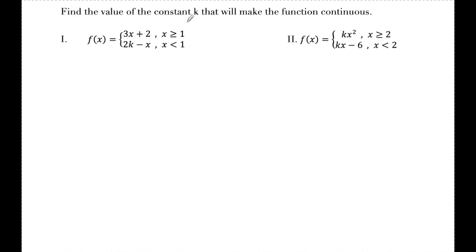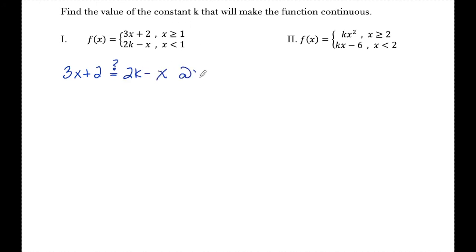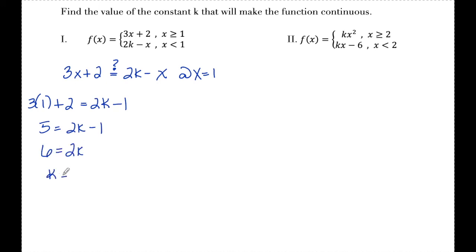These types of problems ask us to find the value of the constant k that makes the function continuous. To do this, I set the two pieces equal to each other at the x value where the domain changes — in this case x equals 1. Plugging x equals 1 into 3x plus 2 and into 2k minus x, and solving for k: 3 plus 2 gives 5 on one side, and I solve to get k equals 3.